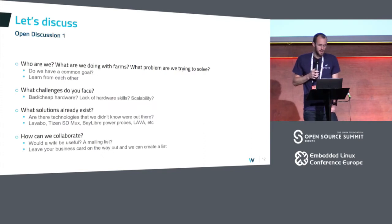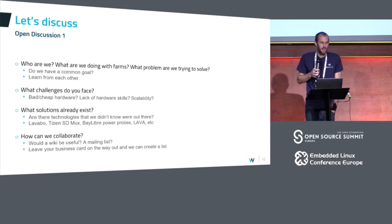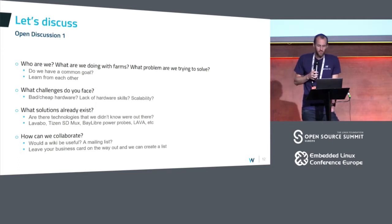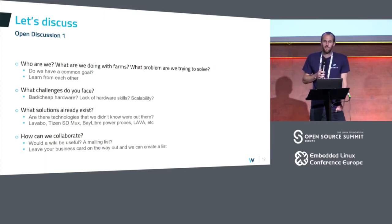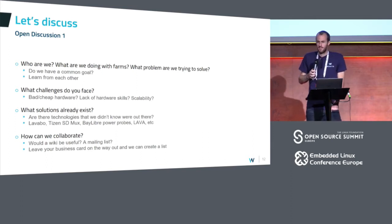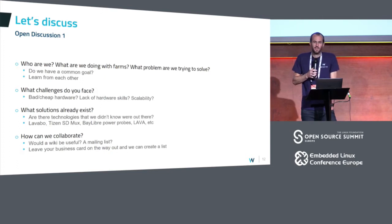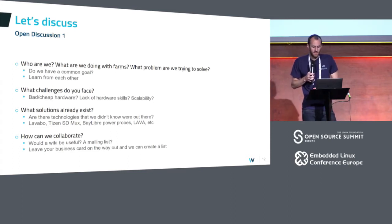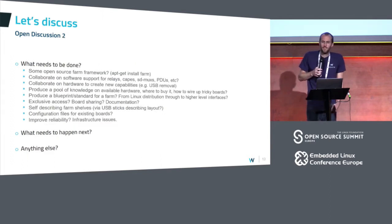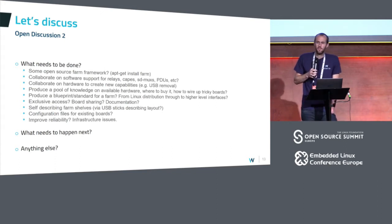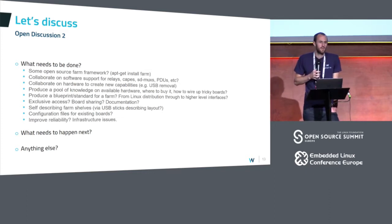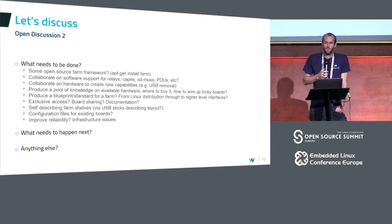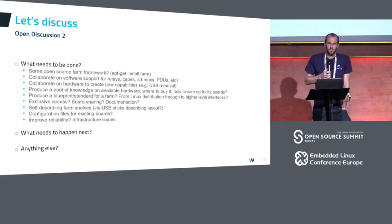I'd like to move on to the open discussion. I'd like to know who everyone is - what we're doing with farms, what problem we're trying to solve, what challenges we face, what solutions already exist. We mentioned TTC and different technologies - simply knowing of their existence is really valuable. And how can we collaborate? Maybe a mailing list would be helpful, or maybe a wiki. I'd then like to talk about what we could do together - is it as simple as having a place for information, or do we go beyond that and create this middle layer to bridge the gap? Wouldn't it be nice if when you buy hardware like a USB relay, there's already a driver or config for this middle layer - a case of apt-get install and it already supports whatever hardware you've got?